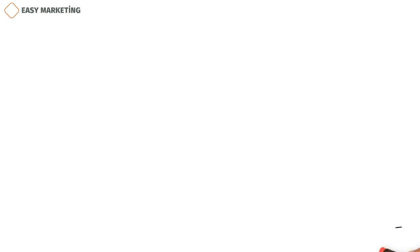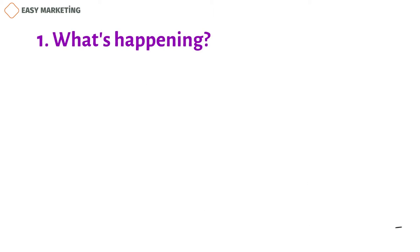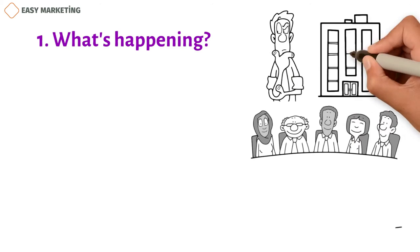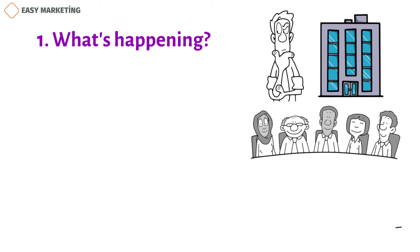We do the following one by one. One. What's happening? The first step is to think about everything you, your team, or your business does that affects your customers in some way.